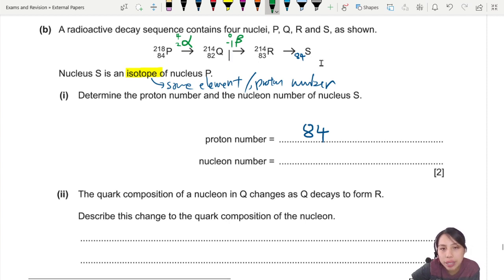That's what a beta emission does. You increase the proton number by 1. Something became a proton. Then from R to S, you increase again by 1. Another beta emission. So here is 0, negative 1. So 0 means there's no change to the nucleon number. So it's still 214. So here, 214. Okay. So here is 2 marks. A1, A1.